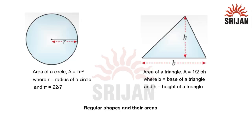For the area of a circle, the formula is pi R squared, where R stands for the radius of the circle, and pi is equal to 22 upon 7.